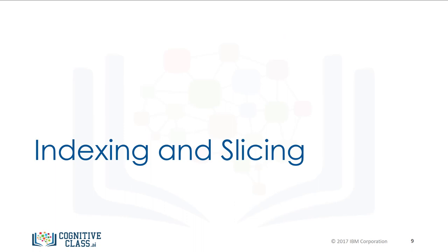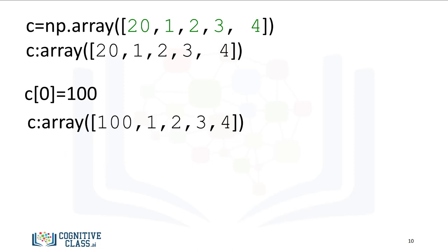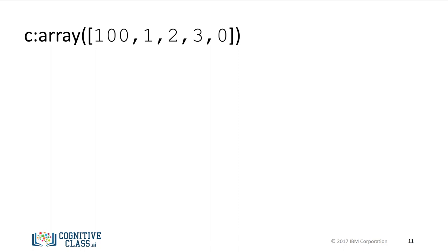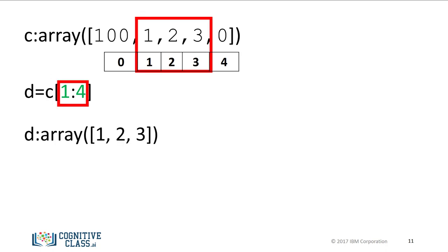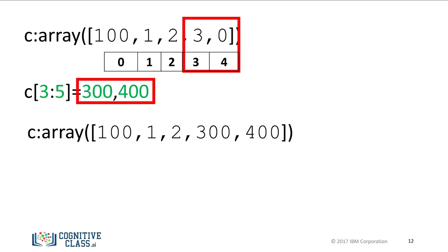Let's review some indexing and slicing methods. We can change the first element of the array to 100. The array's first value is now 100. We can also change the fifth element to 0. Like lists and tuples, we can slice a NumPy array. The elements of the array correspond to the following index. We can select the elements from 1 to 3 and assign it to a new NumPy array D. Note that we do not count the element corresponding to the last index. We can also assign the corresponding indices to new values, and the array C now has new values. See the labs or numpy.org for more examples.